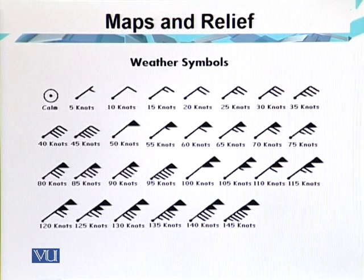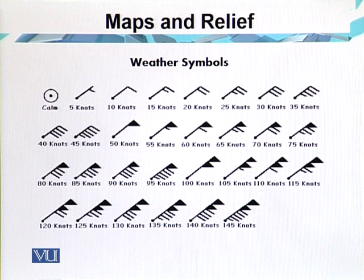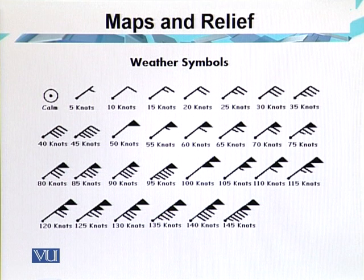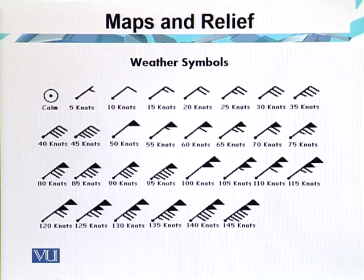Here we have the symbols related to weather. Wind is one of the most important elements of weather. Every sign, symbol, and letter adopted for the representation of topographical forms conveys a definite meaning, so a map becomes a kind of code which cannot be fully interpreted without complete knowledge of conventional signs. Weather denotes the condition of weather elements at a particular place and time.